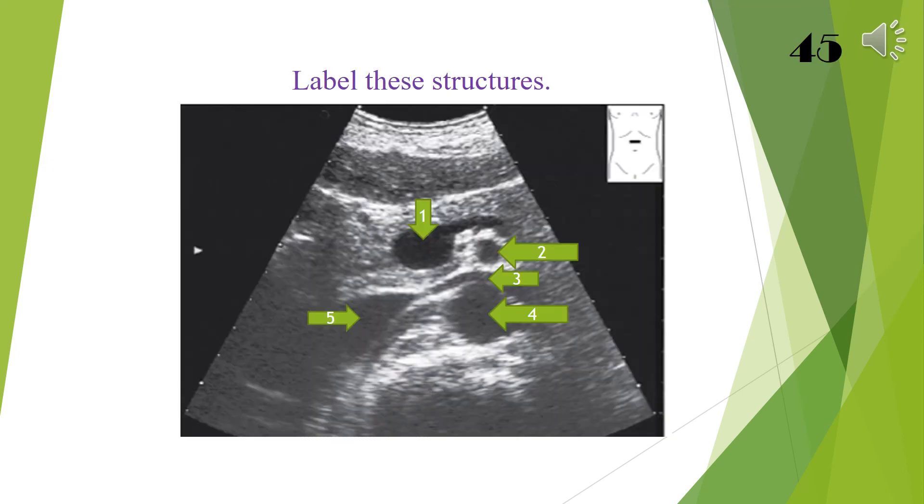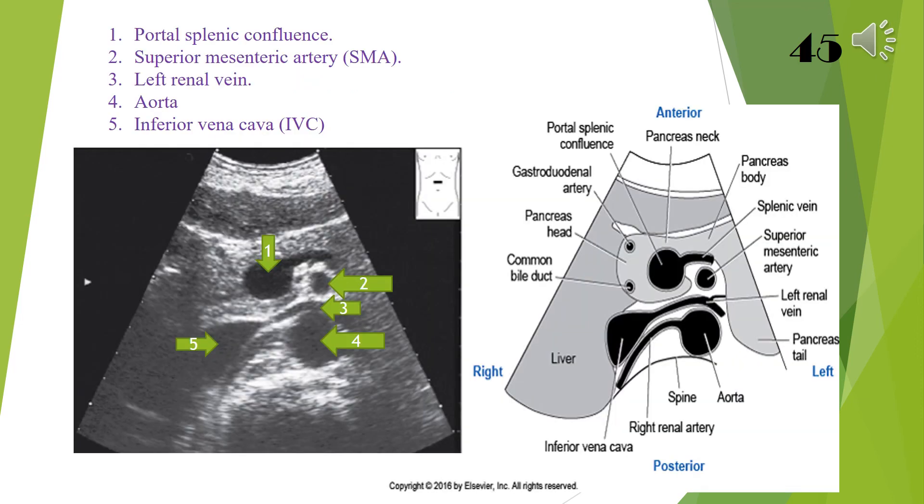Label these structures: 1 portal splenic confluence, 2 superior mesenteric artery SMA, 3 left renal vein, 4 aorta, 5 inferior vena cava IVC.